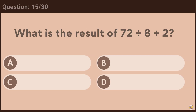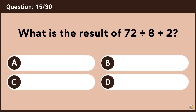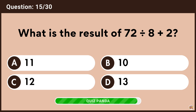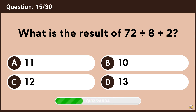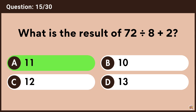What is the result of 72 divided by 8 plus 2? Answer A, 11.